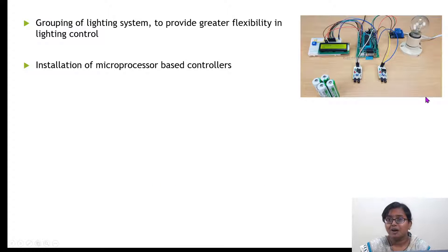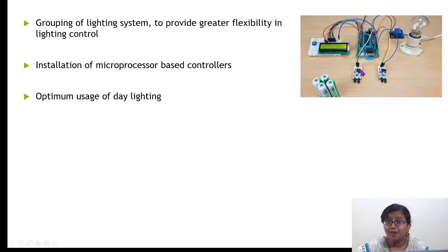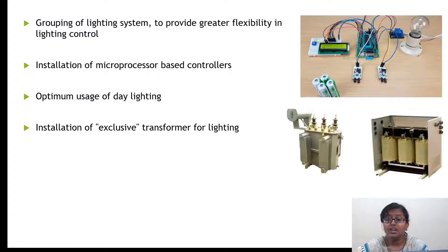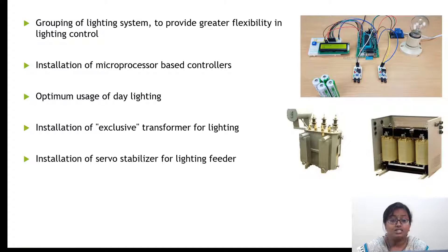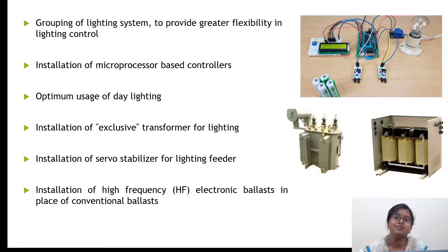You can install microprocessor-based controllers, which are mainly designed for controlling lighting systems in a building. Then there is optimum usage of daylight — when lighting is not required, turn the lights off and utilize maximum solar energy. You can also install exclusive transformers for lighting, which should be energy efficient. Installing servo stabilizers for the lighting feeder is another option. Finally, installation of high frequency electronic ballast in place of conventional ballast — all these techniques can reduce energy consumption in residential and commercial buildings.